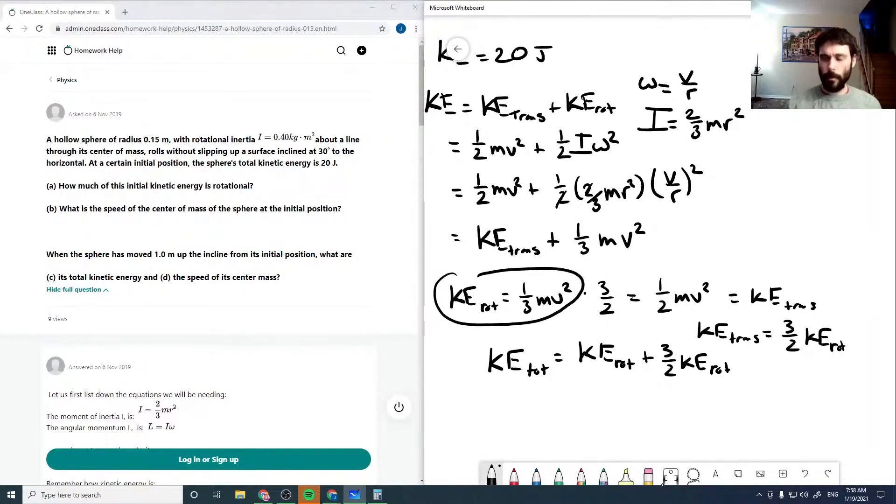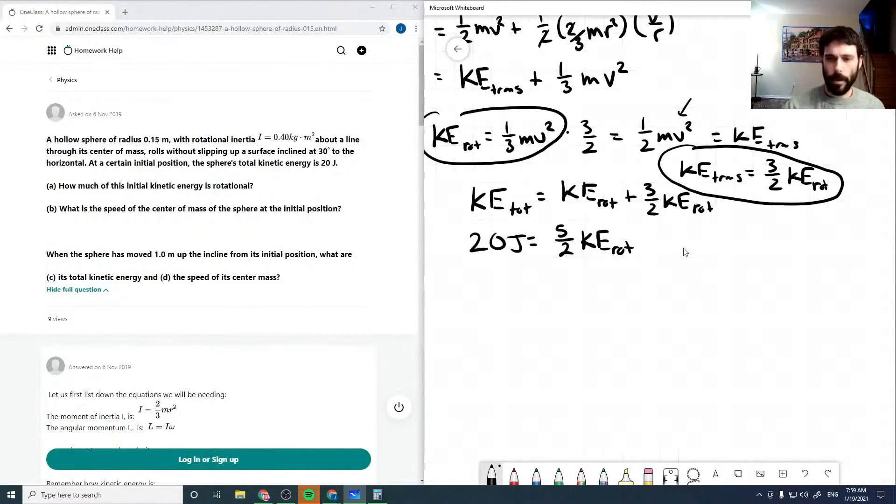So our KE total is KE rotational plus three halves KE rotational. If we multiply this by three halves, then we get our one half mv squared, which is our KE trans. So that means our translational kinetic energy is three halves of our rotational. So if we put this into our total expression again, then we would get five halves, KE total is five halves of rotational kinetic energy, which is 20 joules. So then our rotational kinetic energy is eight joules.